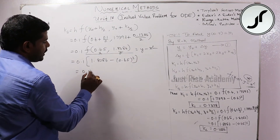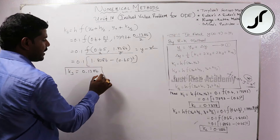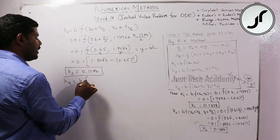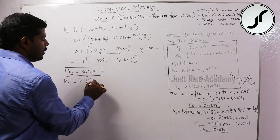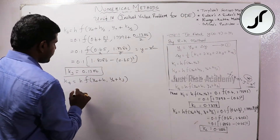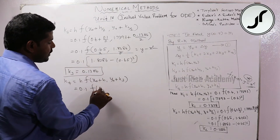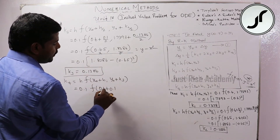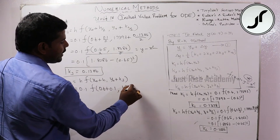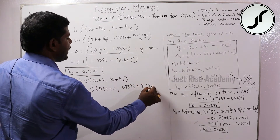Applying in the calculator: f(x, y) equals y minus x squared. y value is 1.8086 minus 0.65 squared, using calculator we get k3 equals 0.1386. k4 equals h into f(x0 plus h, y0 plus k3): h is 0.1, x0 is 0.6 plus 0.1, y0 is 1.7393 plus k3 value 0.1386.